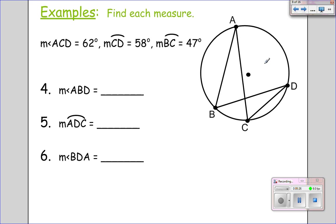Alright. Here we have angle ACD equals 62 degrees. Arc CD equals 58 degrees. And Arc BC equals 47 degrees. And I want to figure out the rest. So you have an inscribed angle right here, intercepting this arc. So that means if we double 62 we get 124 for arc A to D.